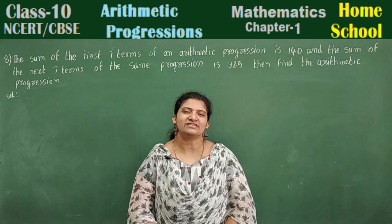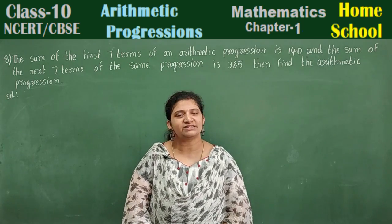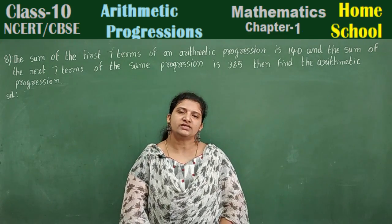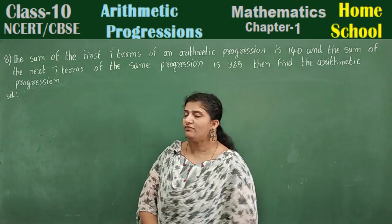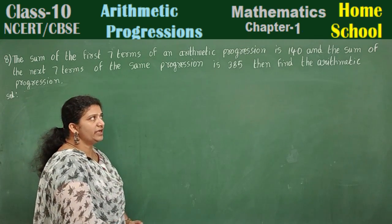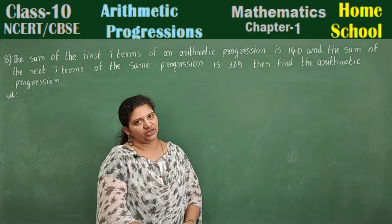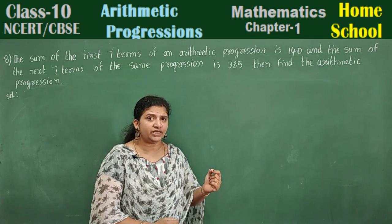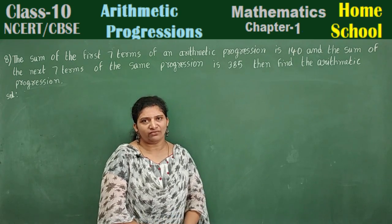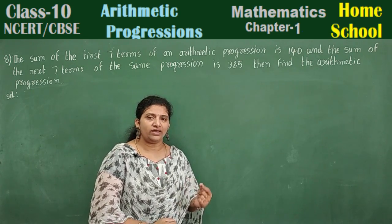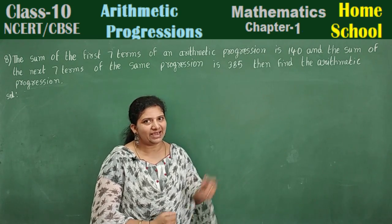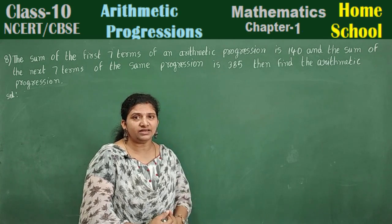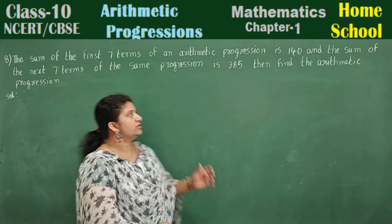Hi, hello! Welcome to Home School. This is your Class 10 Mathematics NCERT or CBSE board. We are on the application problems of Chapter 1, Arithmetic Progression. This is Problem Number 8. The sum of the first seven terms of an arithmetic progression is 140. Stop and understand the point: sum of the first seven terms — a1, a2, a3, a4, a5, a6, a7 — is 140.